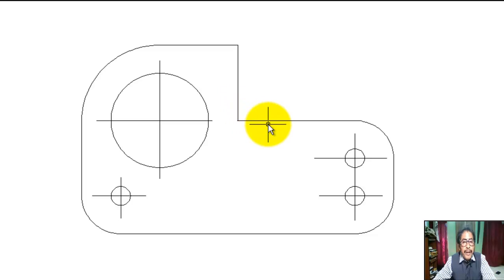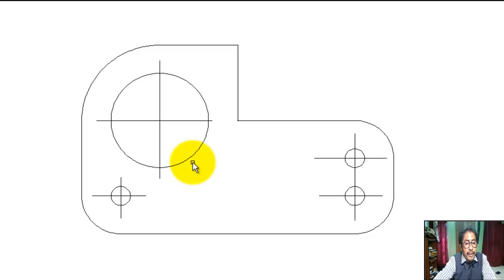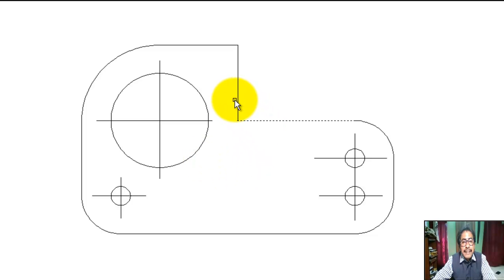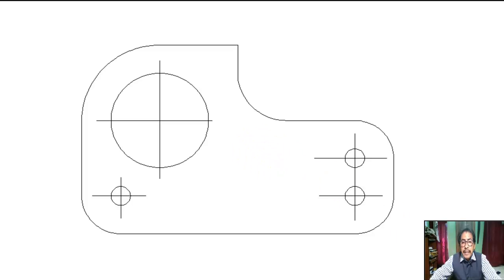This portion has a fillet radius of 12.5. Click on fillet command, type R for radius, enter 12.5, press Enter, select first object, select second object.